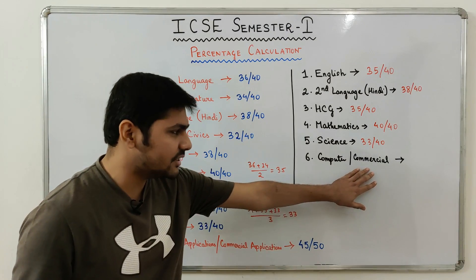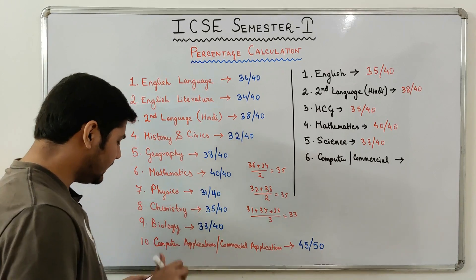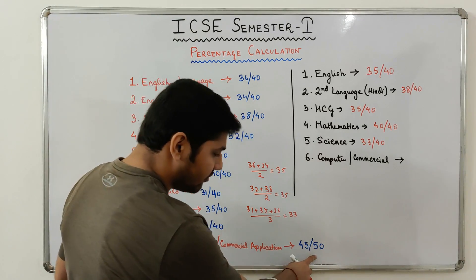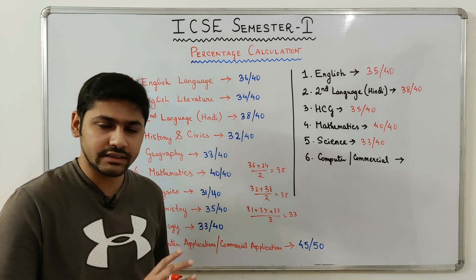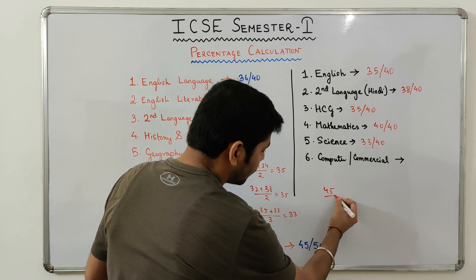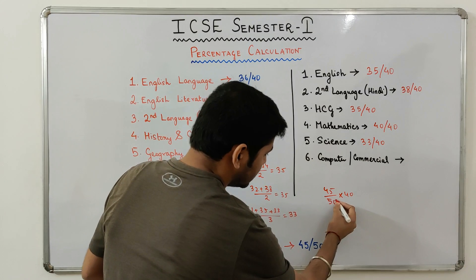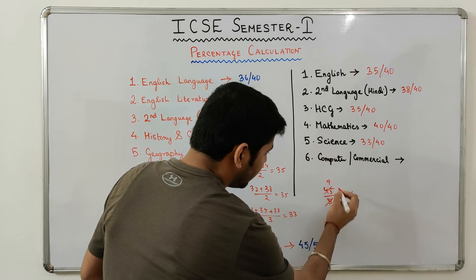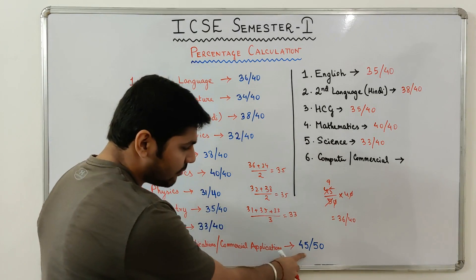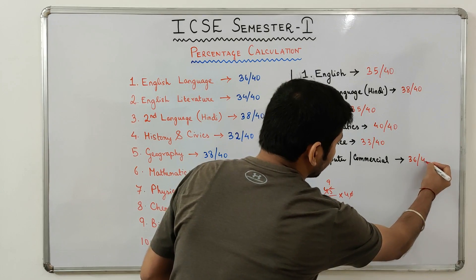Finally we come to Group 3 Elective — Computer Applications, Commercial Applications, or Economic Applications, whichever exam you have taken. As you can see, Group 3 Elective marks are out of 50, so we need to convert this to out of 40. To do that: 45 out of 50 — simply multiply by 40 divided by 50, which gives 9 multiplied by 4 equals 36 out of 40. So whatever marks you have got out of 50, just multiply by 40/50 to convert to out of 40.